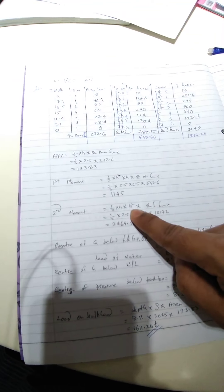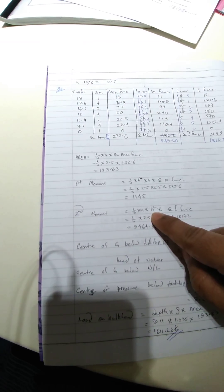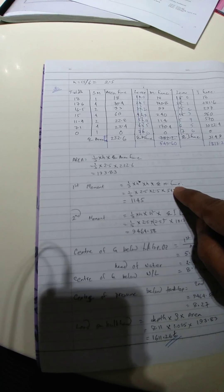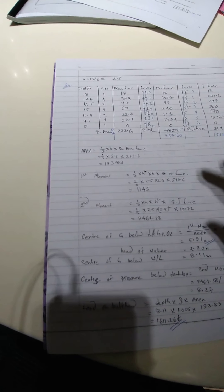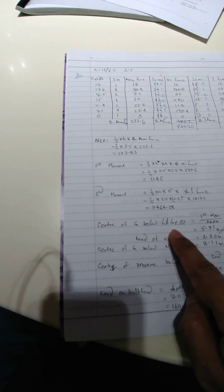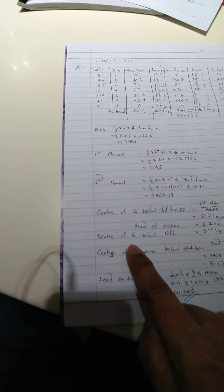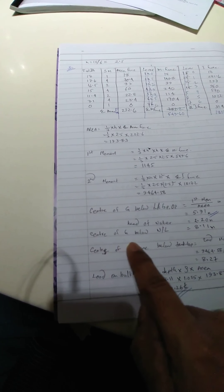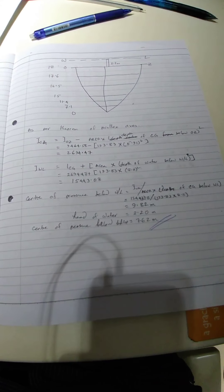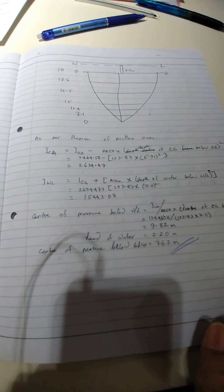By the theorem of parallel axes, ICG equals I-ozot minus area into depth of CG below the tank top. The ICG is what we apply; I-ozot is the second moment. Area is determined first, and depth of CG below the tank top — that is the depth of CG below the ozot — is what we had to find initially: 6.14.